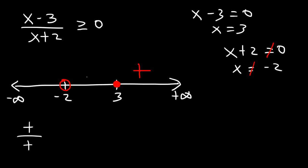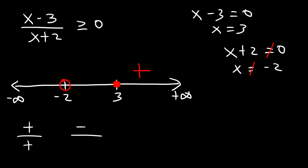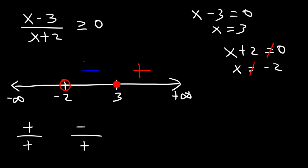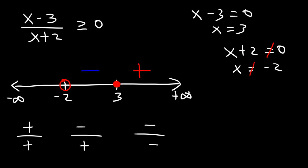Now let's pick a number between negative 2 and 3 — let's try 0. 0 minus 3 is negative, and 0 plus 2 is positive. A negative divided by a positive gives a negative result. And if we try a number in the leftmost region, like negative 3: negative 3 minus 3 is negative 6, so that's negative; negative 3 plus 2 is also negative.